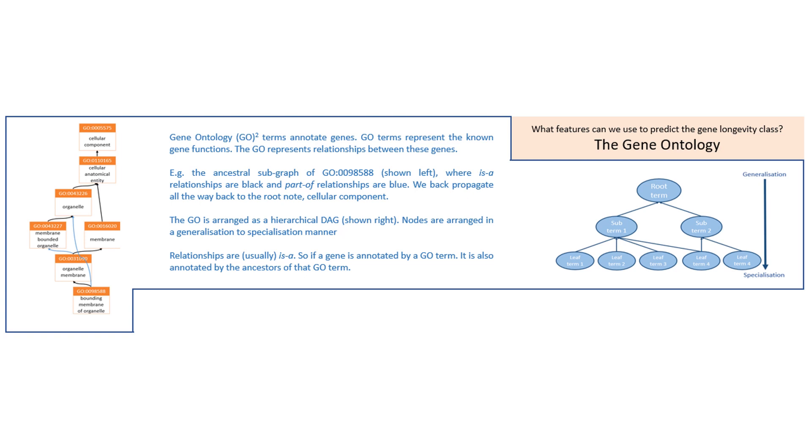The key idea is that if a gene is annotated by one GO term, by virtue of the relationships in the gene ontology and it being a hierarchical dag, it is also annotated by all the ancestors of that GO term.